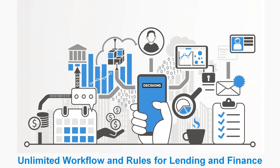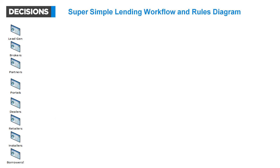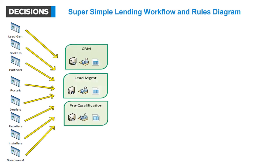For my intro I'm going to show a diagram illustrating how lending systems really are. Every loan starts somewhere from that first lead touch — lead generation from your own marketing or from lead aggregators, brokers and realtors in mortgage, portals like DealerTrack and RouteOne in auto, dealers in auto and powersports or construction equipment, point of sale at retailers like furniture and electronics. I did a lot of work in solar lending and home improvement, where the first touch is installers, contractors, and of course borrowers directly.